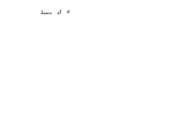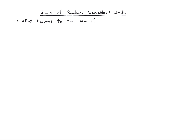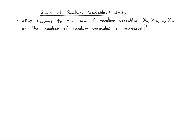We'll continue to talk about sums of random variables and now about limits. What I mean by limit is I want to understand what happens to the sum of random variables x1 up to xn as the number of variables n increases and really goes to infinity. For very large n, how do these random variables behave, and specifically, how does their sum behave? The answer depends on normalization.